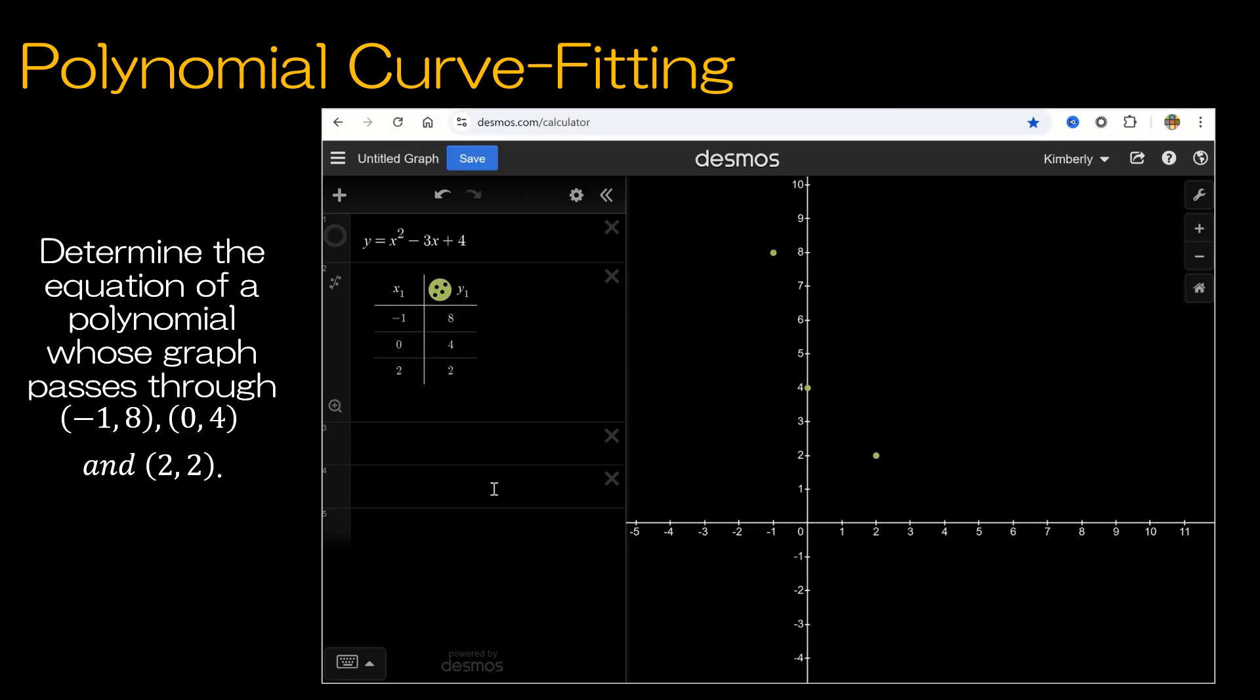I also want to show you something using Desmos. Desmos.com/calculator is just a regular graphing calculator. I have a table containing the three points: negative 1, 8, 0, 4, 2, 2, and the equation we just came up with, X squared minus 3X plus 4. We can see this quadratic equation does cross through those three points.